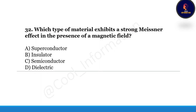Next question: which type of material exhibits a strong Meissner effect in the presence of a magnetic field — option A: superconductor, option B: insulator, option C: semiconductor, option D: dielectric? Correct option is A, a superconductor is the type of material that exhibits a strong Meissner effect in the presence of a magnetic field.